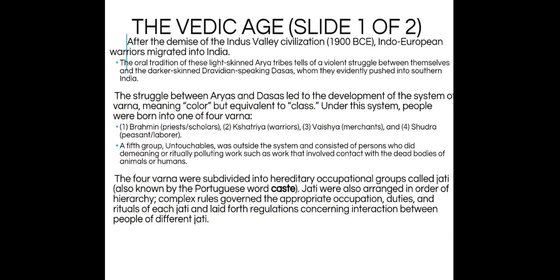In the Vedic Age, after 1000 BCE, the Vedic peoples began to settle down to agriculture, and by 500 BCE coins were appearing in India — about the same time they were appearing in China and Persia. After the fall of the Indus Valley civilization around 1900 BCE, Aryan warriors began migrating into India between 1900 and 1500 BCE. The oral tradition of the light-skinned Aryan tribes tells of a violent struggle between themselves and the darker-skinned native Dravidians, who were pushed into southern India. This struggle leads to a class system called varna, which literally means 'color.'